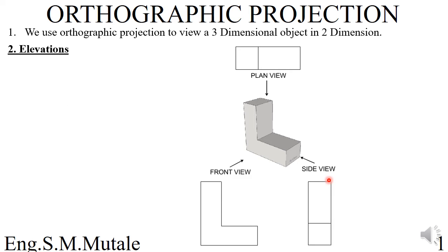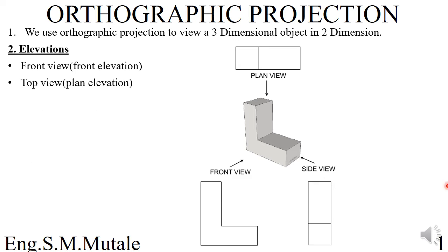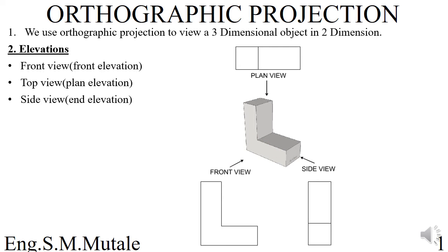We shall discuss what we call elevations. The front view or front elevation is where you view the object from the front. The top view is also called the plan view, viewed from above. The side view is another elevation — the object has multiple sides, and they will indicate which side you need to view from.